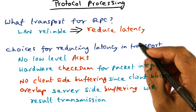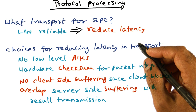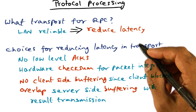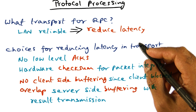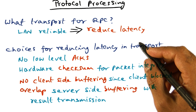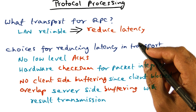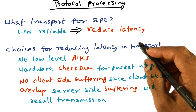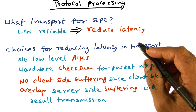Recapping what we said, the sources of RPC latency are the following: marshaling and data copying, context switches — both at the client side and the server side. Similarly, marshaling and data copying also happens both on the client side and the server side. And the actual protocol processing, in order to send the packet on the wire.